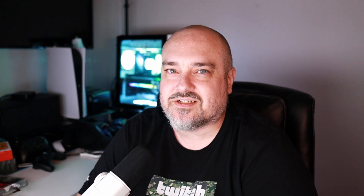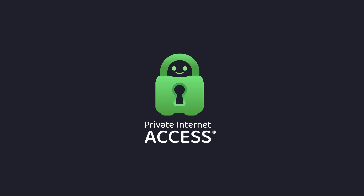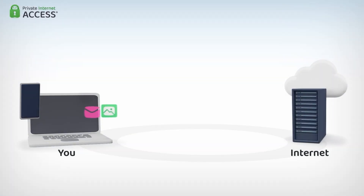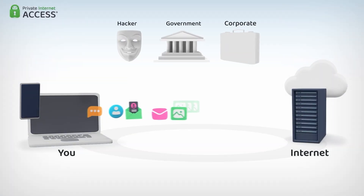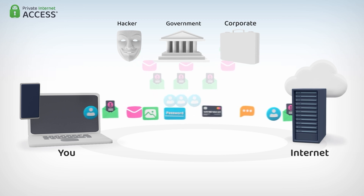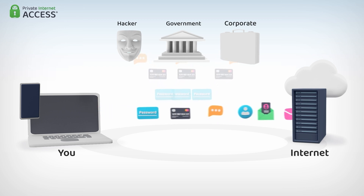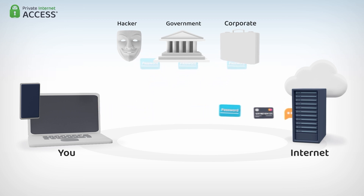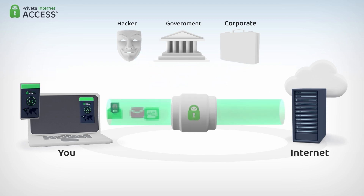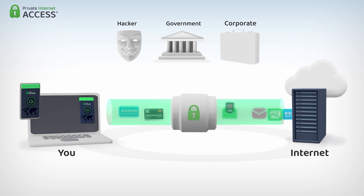I'm going to show you three different methods on how you can use Private Internet Access to secure your browsing. Today's sponsor is Private Internet Access. If you are somebody who uses public Wi-Fi at hotels while traveling or at coffee shops, all of your data is transmitted across an unencrypted network. That's where PIA comes in — all of your data is hidden and protected on their private infrastructure.